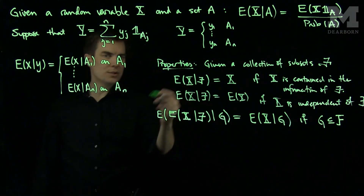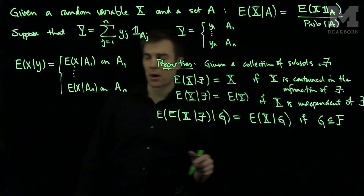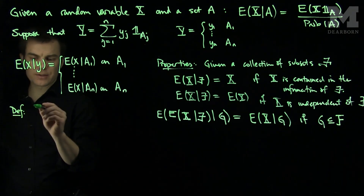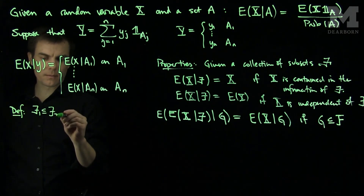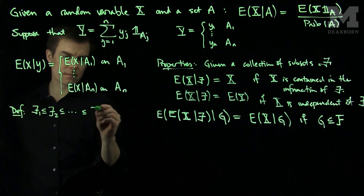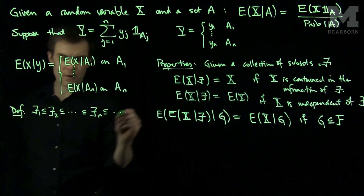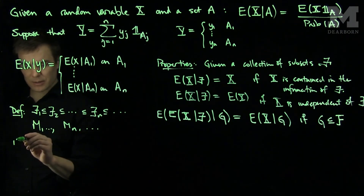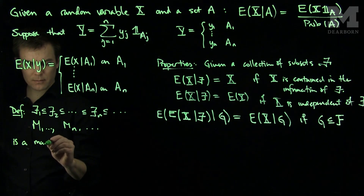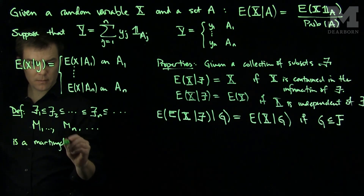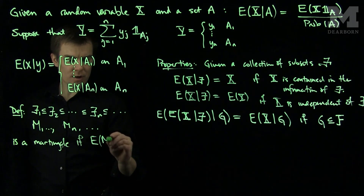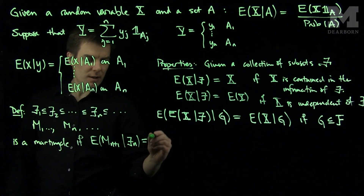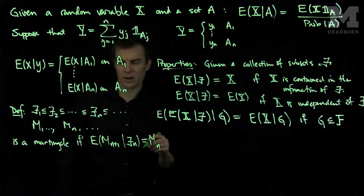We will use these properties to find out when something is a martingale. A sequence is a martingale if we have an increasing sequence of information and the conditional expectation of the (n+1)th random variable given the nth information equals the nth random variable.